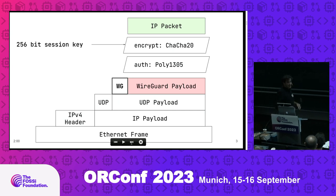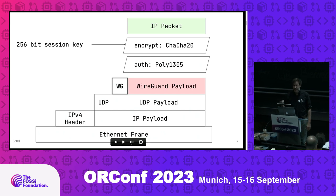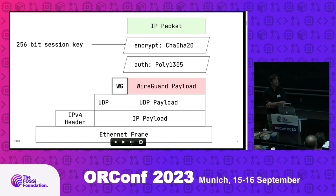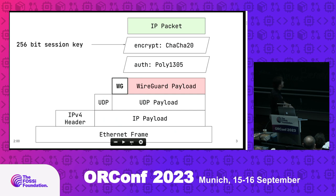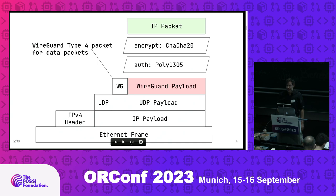Very short introduction on the stack: it's IP tunneled inside IP, encrypted with ChaCha20, authenticated with Poly1305, put in UDP with a short WireGuard header. This is the data packet — we're talking about a few types of packets. This is the WireGuard type 4 packet, which carries the encrypted data.